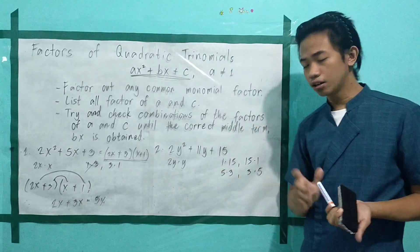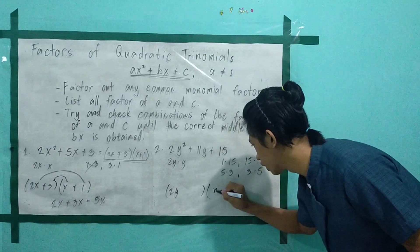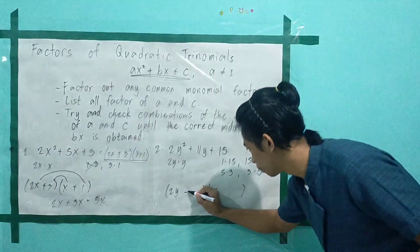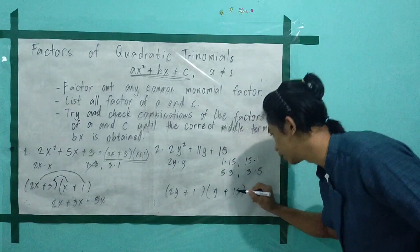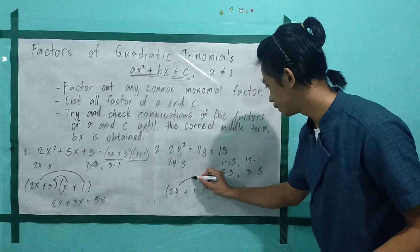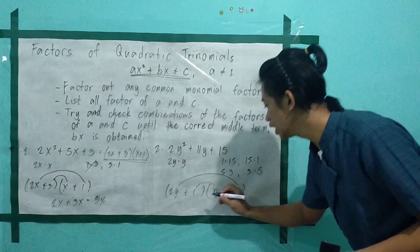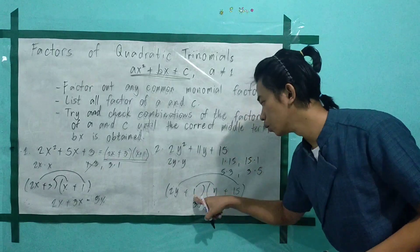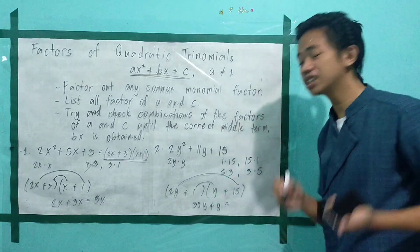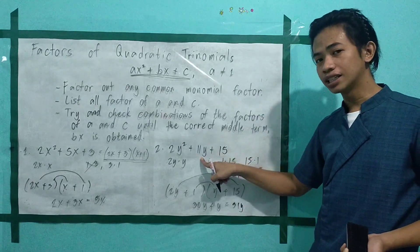Trial and error method again. We have (2y + 1)(y + 15). So 2y multiplied by 15 gives 30y, and 1 multiplied by y gives y. Their sum is 30y plus y, which is 31y. That is not the same as our middle term, so this is not the correct factoring.